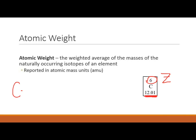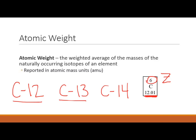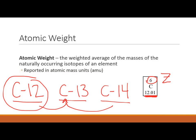Why isn't it a perfect 12, 13, or 14? Because it's a weighted average. We have carbon-12, carbon-13, and carbon-14, with masses of approximately 12, 13, and 14 AMUs respectively. If we did a regular average we'd get about 13, but the vast majority of carbon on Earth — about 98–99% — is carbon-12. So the weighted average comes out very close to 12, giving us 12.01.